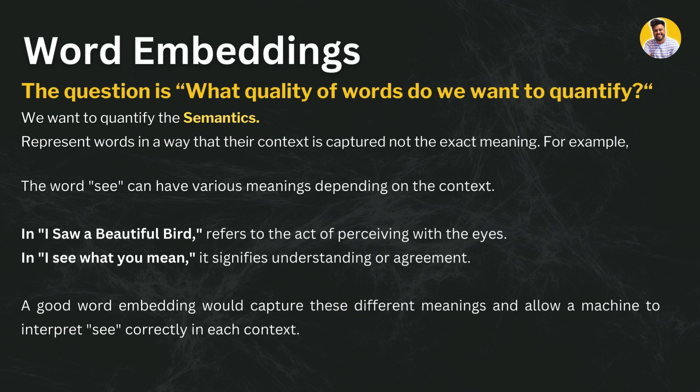For example, take the word 'see'. If I say 'I saw a beautiful bird', that refers to the act of perceiving with eyes. But if I say 'I see what you mean', it signifies understanding or agreement. A good word embedding would capture these meanings and allow a machine learning model to interpret the word 'see' correctly in different contexts.